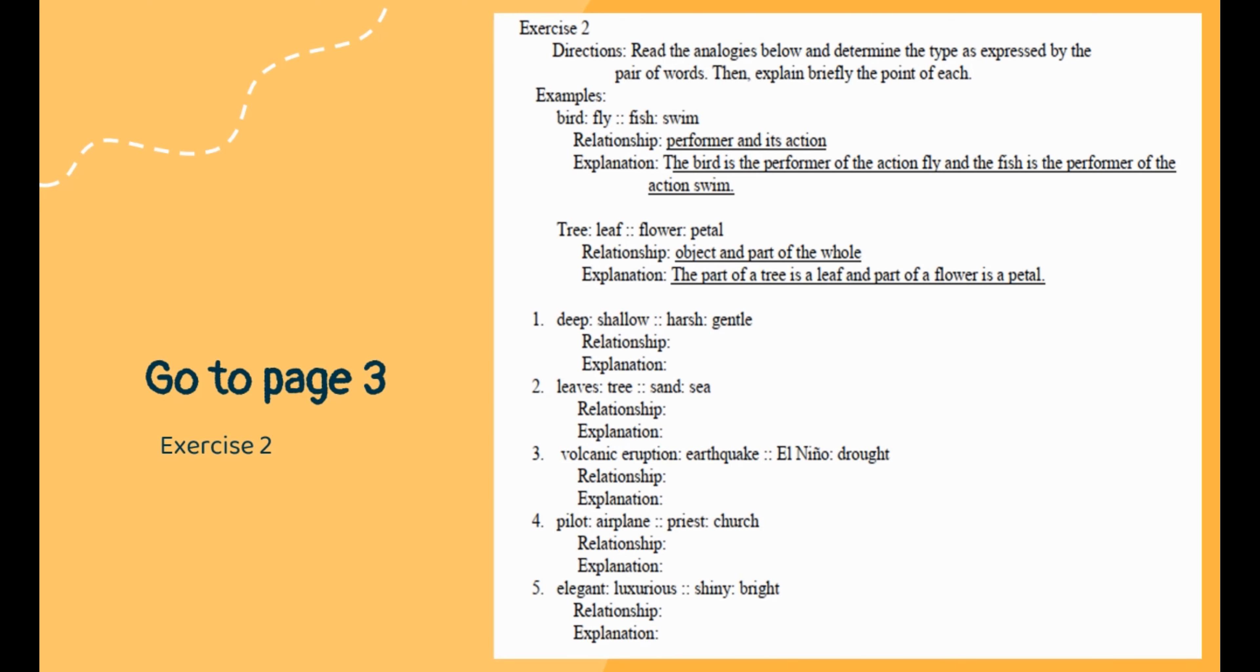Number one: deep is to shallow and harsh is to gentle. The relationship is antonyms or opposite words. Deep is the antonym of shallow and harsh is the antonym of gentle. Number two: leaves is to tree as sand is to sea. The relationship is part to whole. Leaves are part of the tree and sand is part of the sea.